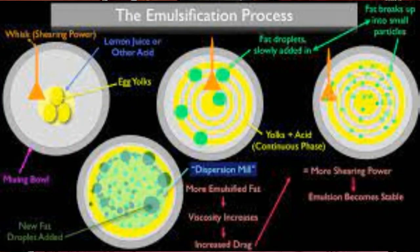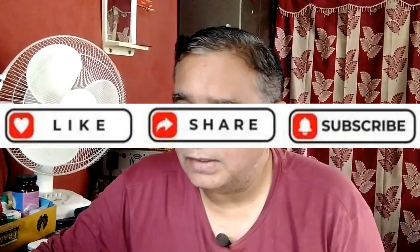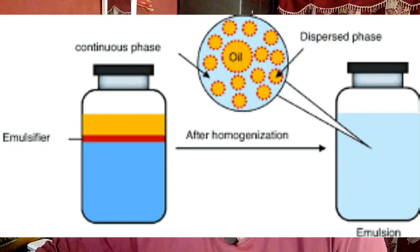Emulsification in the human body: fat emulsification is the process of increasing the surface area of fats in the small intestine by grouping them into small clusters. This is the responsibility of a liquid created by the liver and stored in the gallbladder. Actual digestion of the fats is then accomplished by lipase, an enzyme from the pancreas.